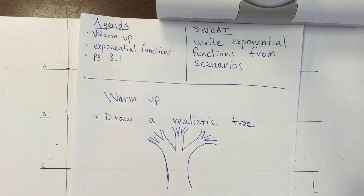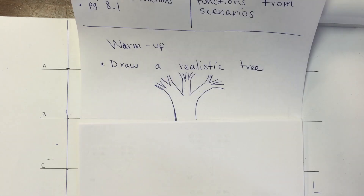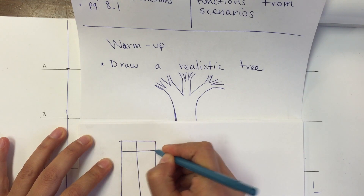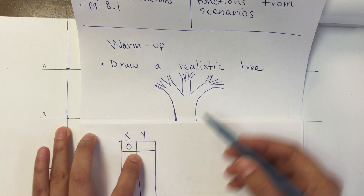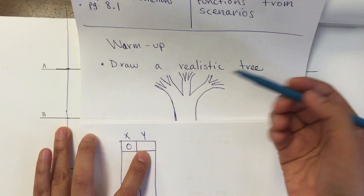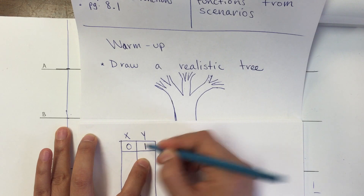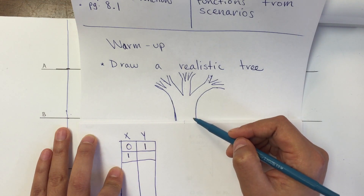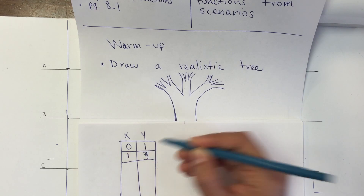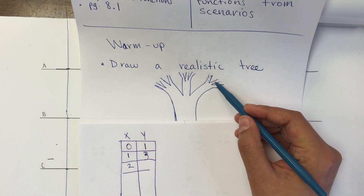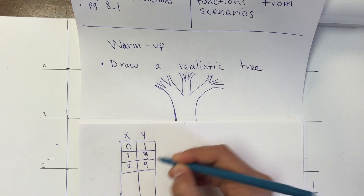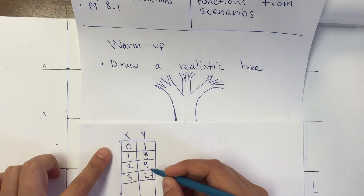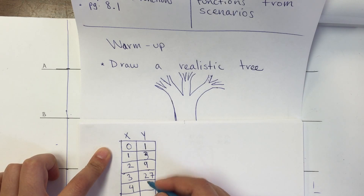We're going to take that to write our first function. What's happening here? At zero, how many parts do we have? It's not a branch — it's the trunk, so we're going to say that it's one. In the next knot, how many do we have? We have three. The next one we have nine. And so what do you think the next one is going to be? We're going to have 27, and the next is going to be 81.